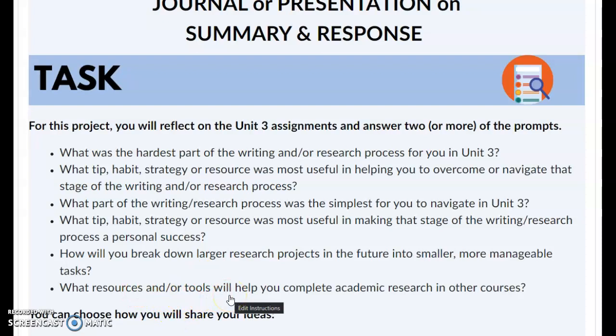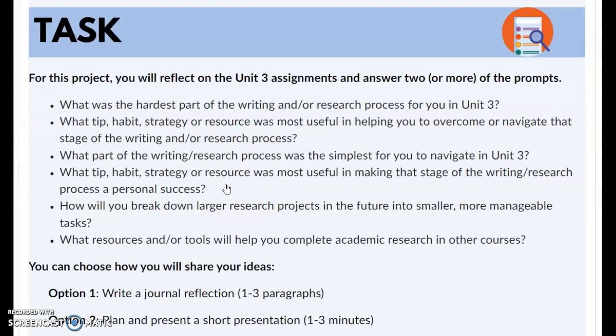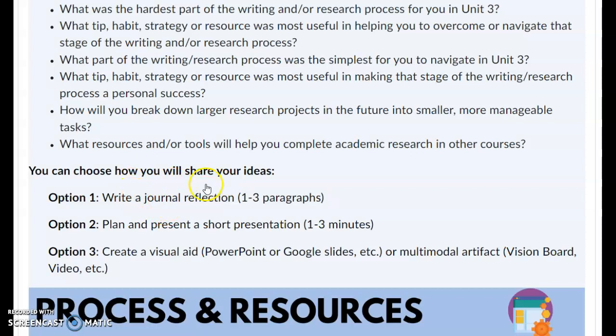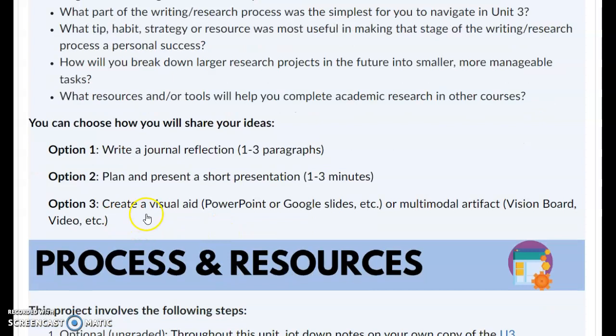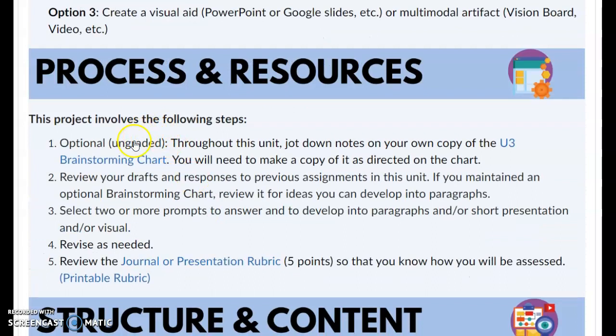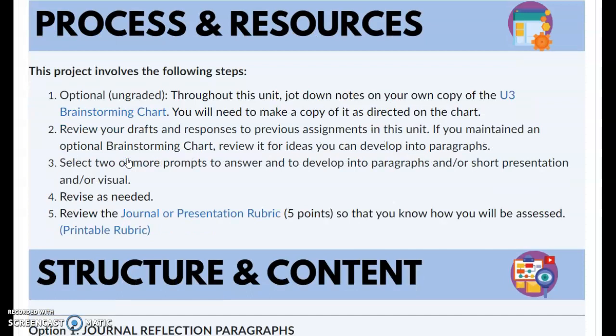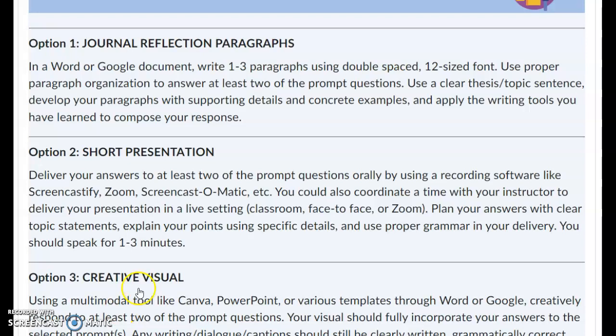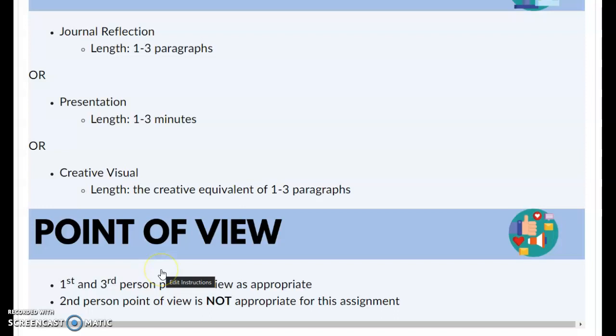You can answer two or more prompts. Options for how you can respond are the same as before: option one, write a journal reflection — make sure you're writing strong, organized paragraphs with clear topic sentences; option two, plan and present a short presentation one to three minutes long; option three, create a visual aid such as a PowerPoint or Google Slides. A brainstorming chart is available for your use, and there's a more in-depth explanation of each option. You would submit either a Microsoft Word document, a link, or upload the PowerPoint through D2L.